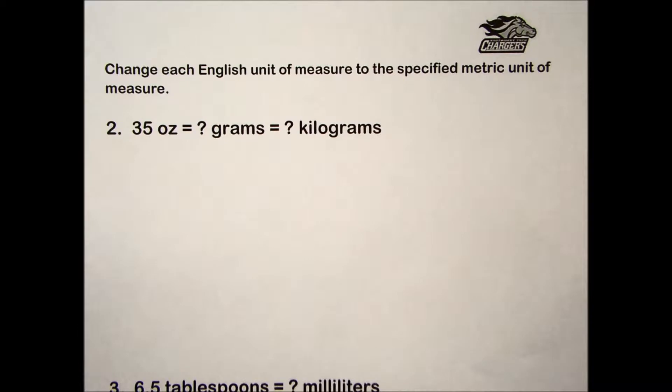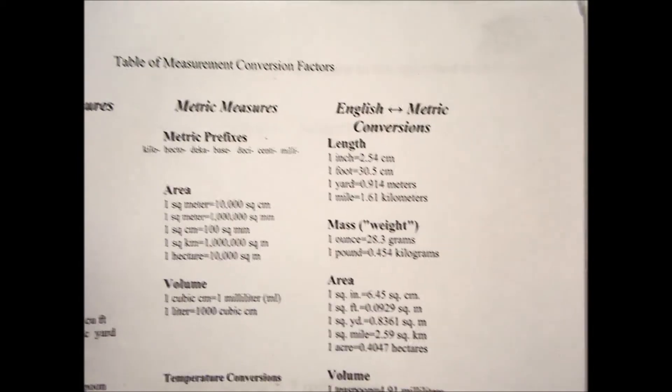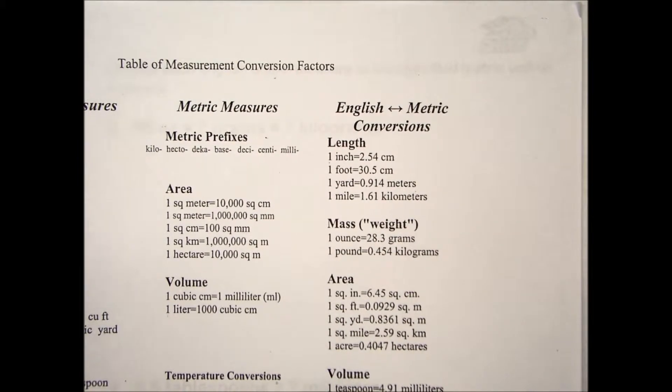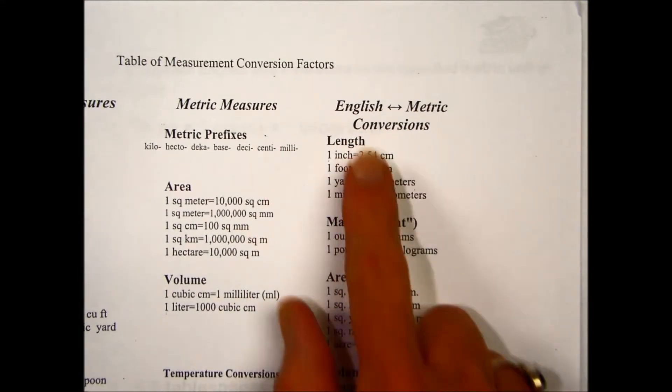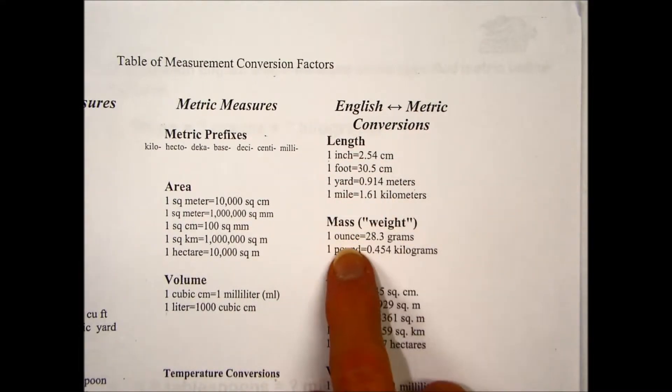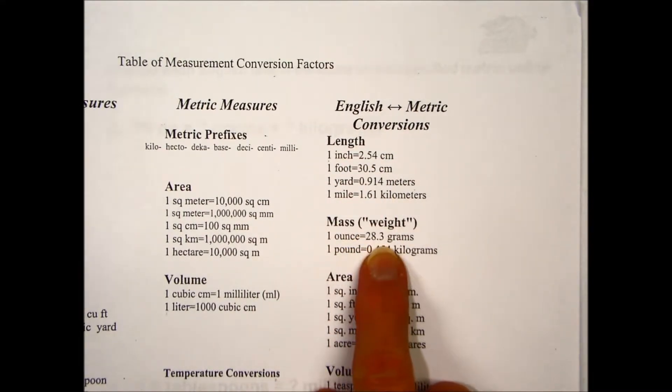In problem number two they're giving us the English measurement 35 ounces and asking us to convert this mass or weight into its equivalent metric quantity. If we go to the conversion factor table in your book, third column, and we look under the category of mass and weight, the first identity there is the one that we will need to solve this problem.